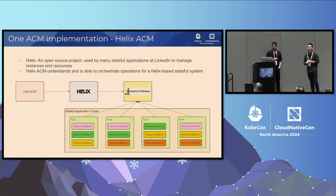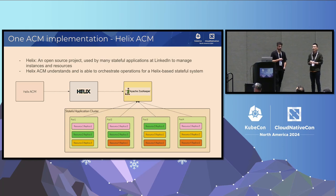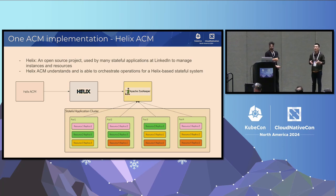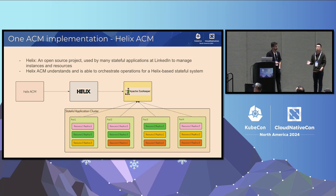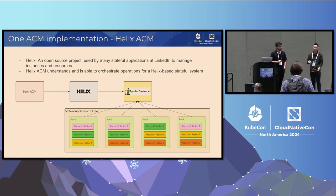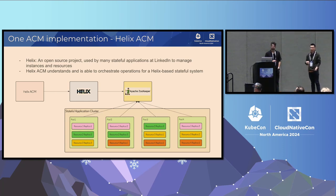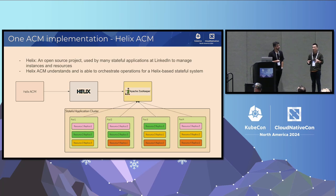Here is a real-world example of ACM — we call it Helix ACM at LinkedIn. Helix is an open-source project used by many of LinkedIn's stateful applications to manage their clusters, instances, and resources. A typical Helix-based system contains three main parts: Helix as the coordinator, ZooKeeper as the metadata store, and the application cluster itself, which can have multiple resources, each replicated. In the example, the cluster has four partitions in different colored rectangles, and each resource has three replicas. We'll use Helix ACM as an example to see how ACM works in practice later in this talk.